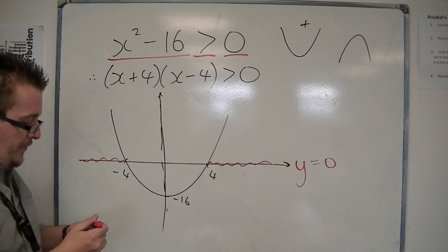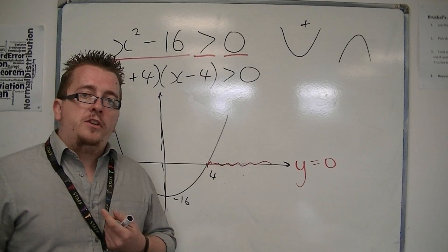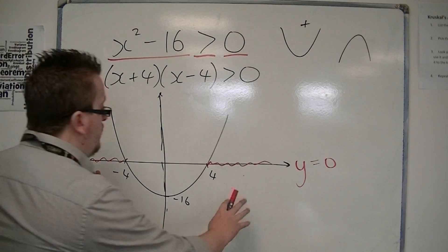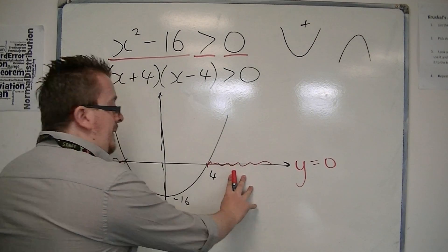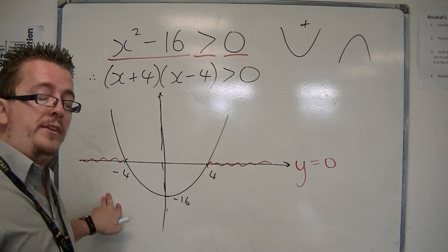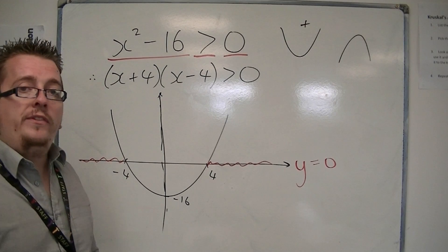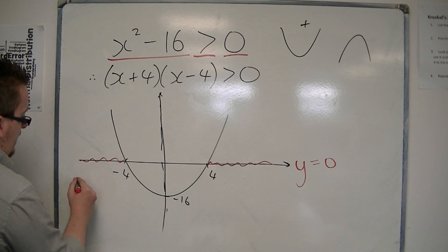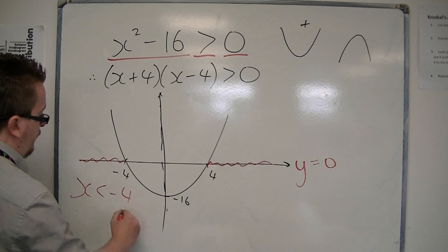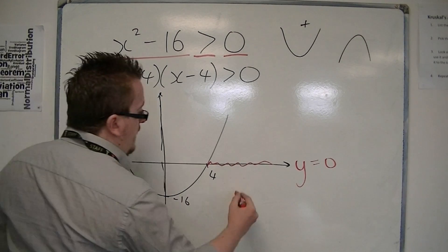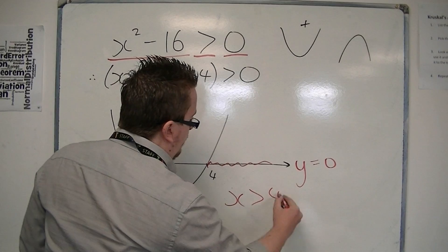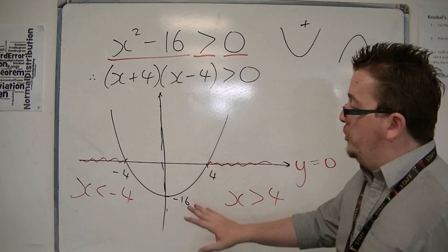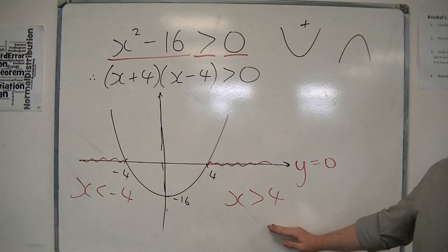So, you can see by this sketch that the solutions that we're looking for are split into two distinct sections. And because they're split into two distinct sections, you must represent the inequalities in two distinct inequalities. This part is x is less than minus 4, and this part is x is greater than 4. So, these are the two solutions to the inequality.